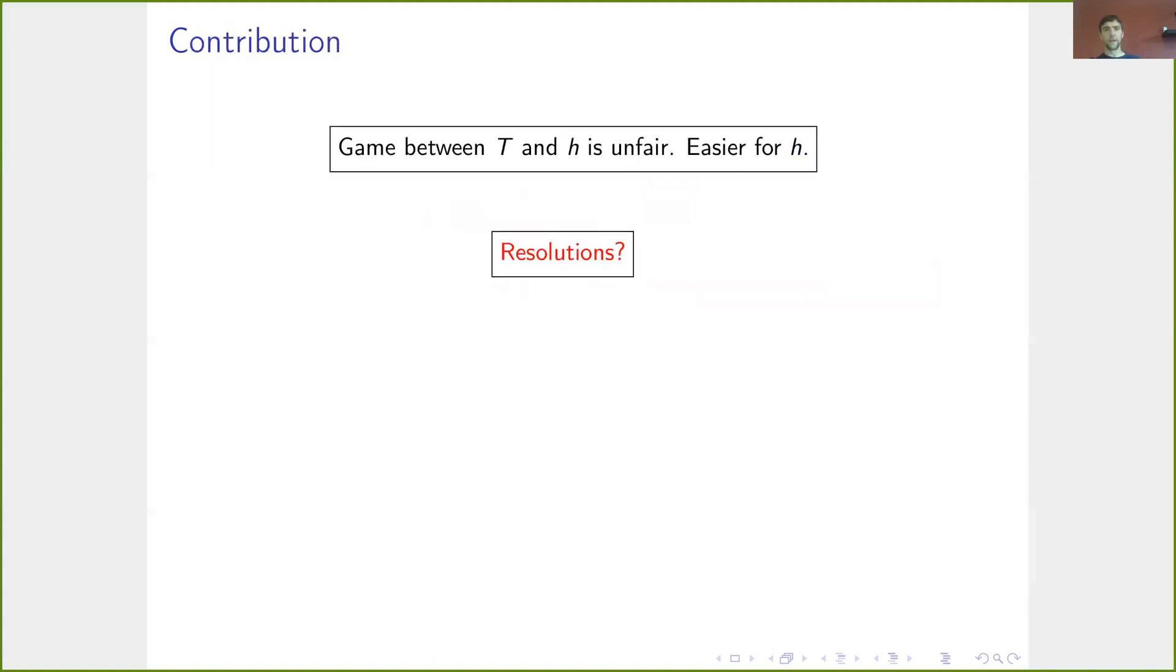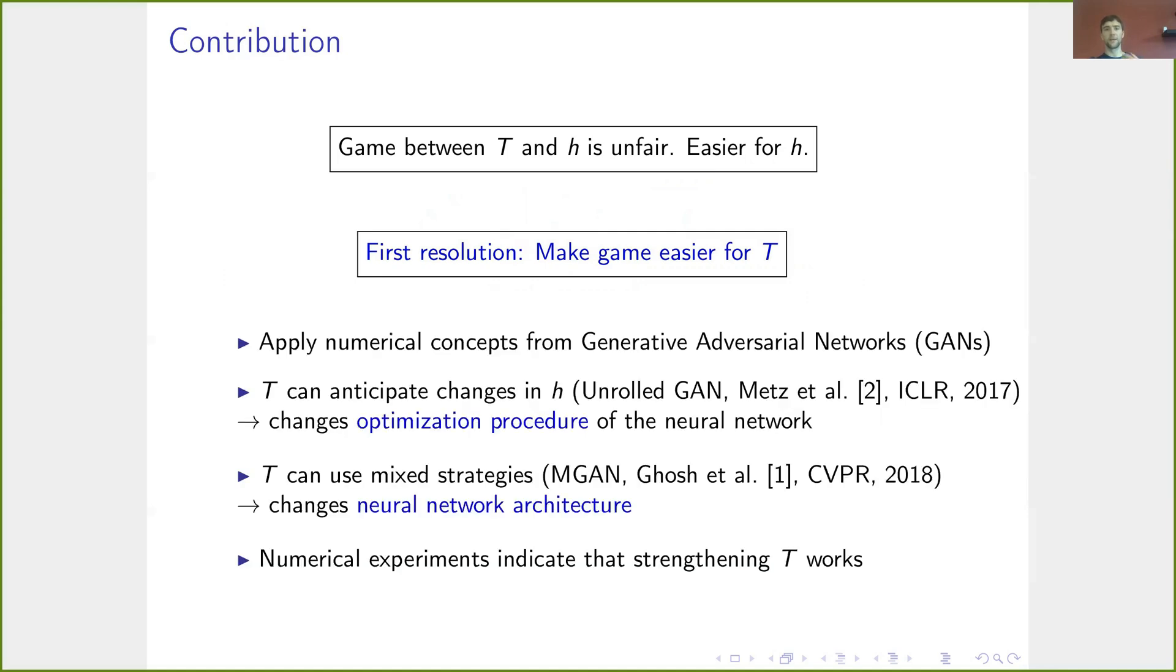So what do we do? Well, we have two resolutions. The first one is purely numerical. I don't want to go into too much detail on this, but we apply some concepts from generative adversarial networks. For instance, changing the optimization procedure for updating the parameters of the network T and also changing the neural network architecture. So these are purely numerical adjustments. They increase the computational complexity, so the runtime is increased, but also the training process gets more stable with these methods.